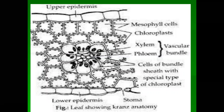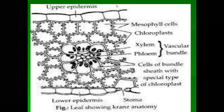C4 plants show a special type of leaf anatomy called Kranz anatomy. Plants like maize and grass show Kranz anatomy. In Kranz anatomy, parenchymatous cells are present around the vascular bundles, and these parenchymatous cells are called bundle sheath cells. The bundle sheath cells are connected with mesophyll cells via plasmodesmata.